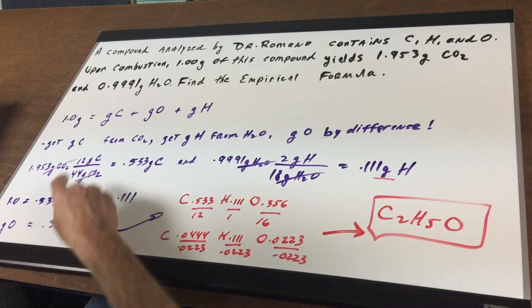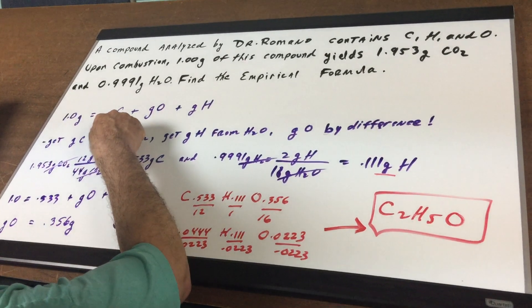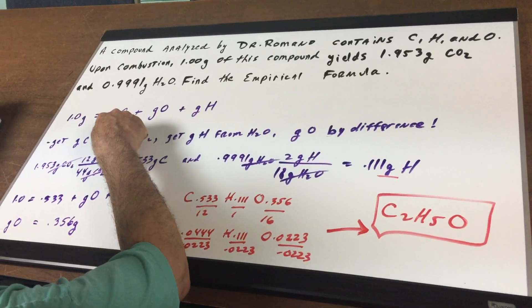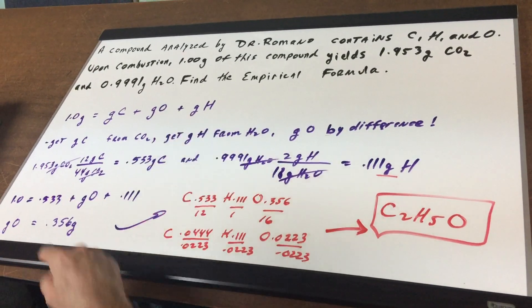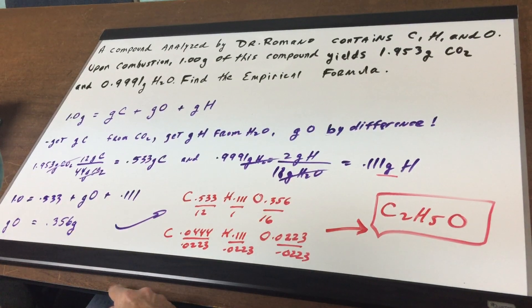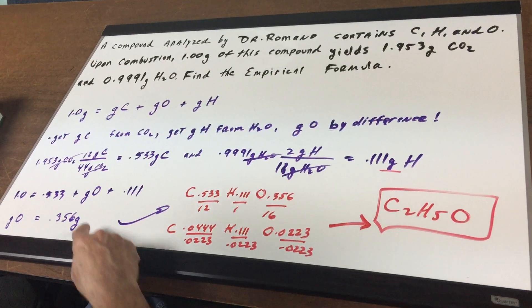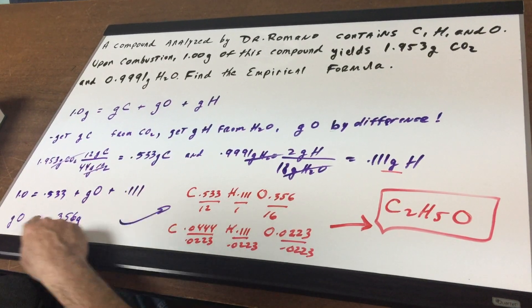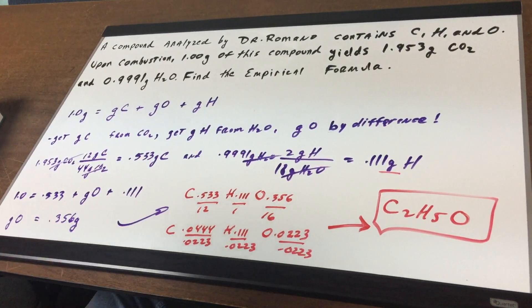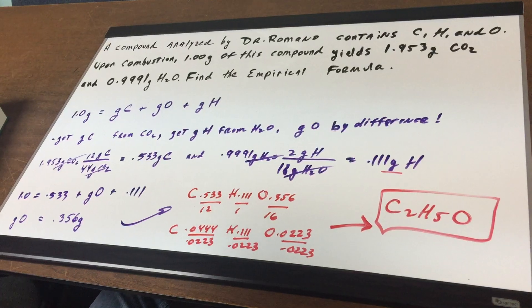Now we go back in. We know the grams of carbon was 0.533, the grams of hydrogen was 0.111, and by difference we can get the grams of oxygen.